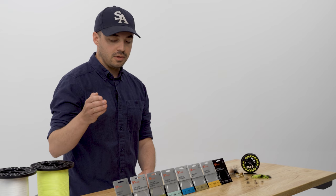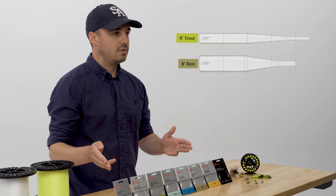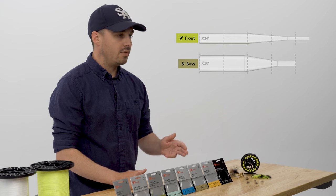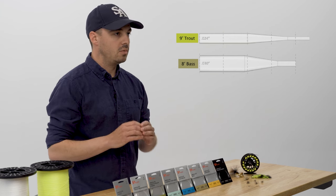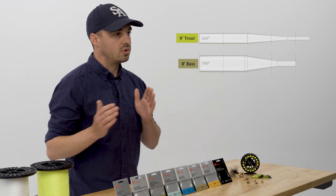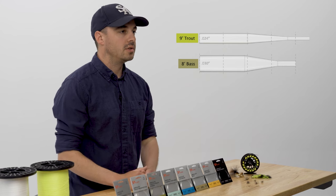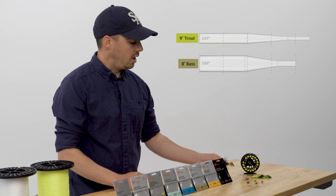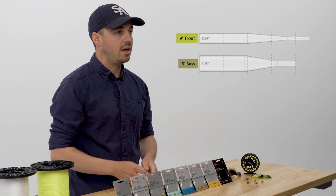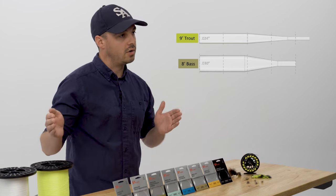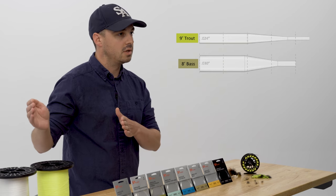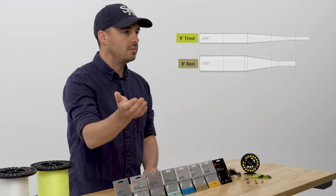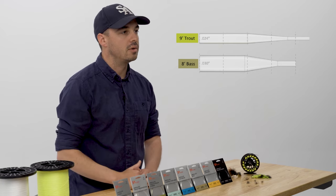Let's use those points I went over to compare a couple of different leader tapers. If we look at something like a trout taper and a bass leader, we're going to see some drastic differences. The bass leader is going to have a longer, larger butt section with a shorter taper section and a shorter tippet section, better designed for throwing large flies. By comparison, the trout leader is going to have a longer, smaller butt section with a longer taper section and a longer tippet section — all determining that the leader casts more delicately and can deliver a smaller fly more accurately.